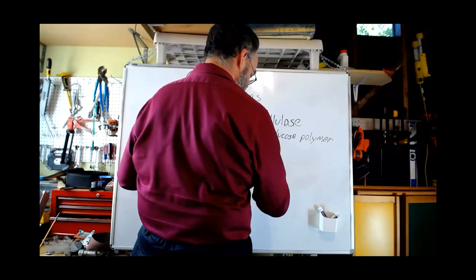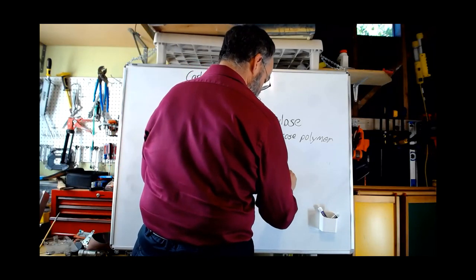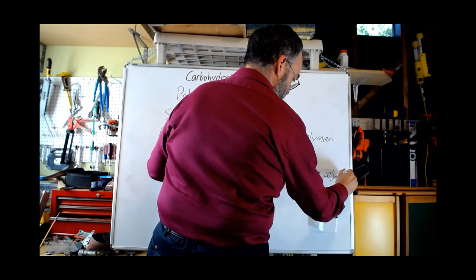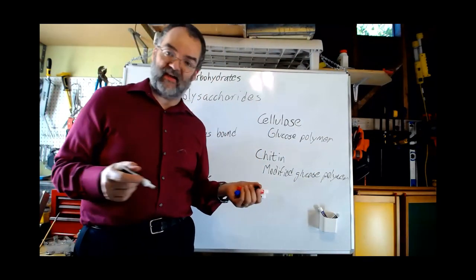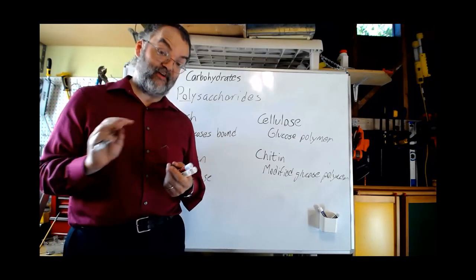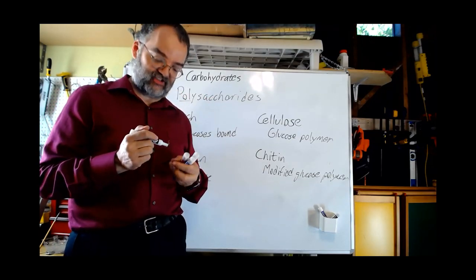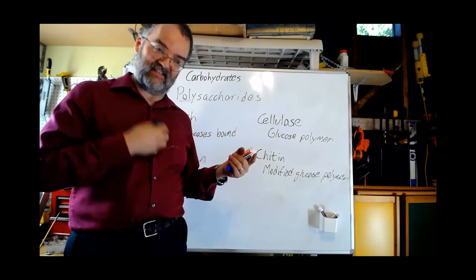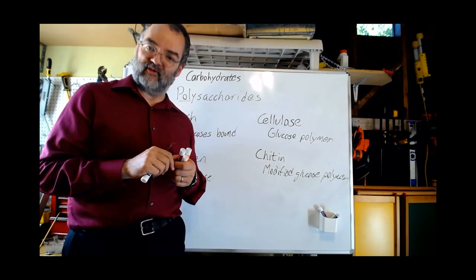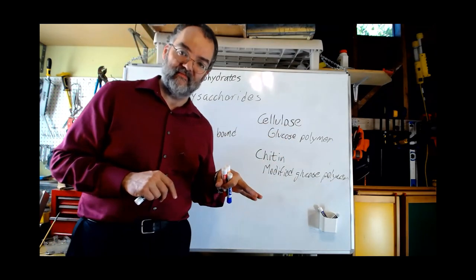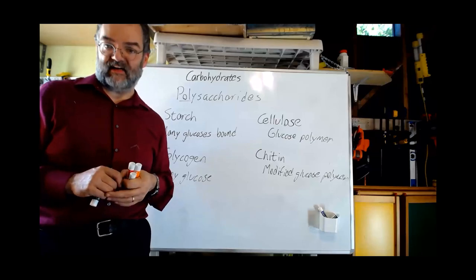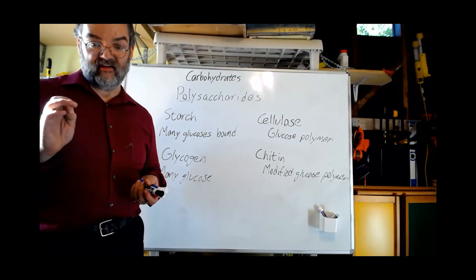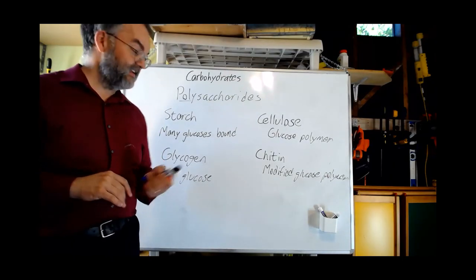One more polysaccharide: chitin, which makes up arthropod exoskeletons — crabs, insects, spiders, lobsters — and the cell walls in fungi, giving them that slightly tough leathery texture. Chitin is a polymer of a modification of glucose that makes it a little more flexible and softer. So that's also mostly a glucose polymer. Those are some examples of polysaccharides, larger glucose polymers. That pretty much covers it for carbohydrates. Our next category of biomolecules, which will be in the next section of this lecture, is nucleic acids.